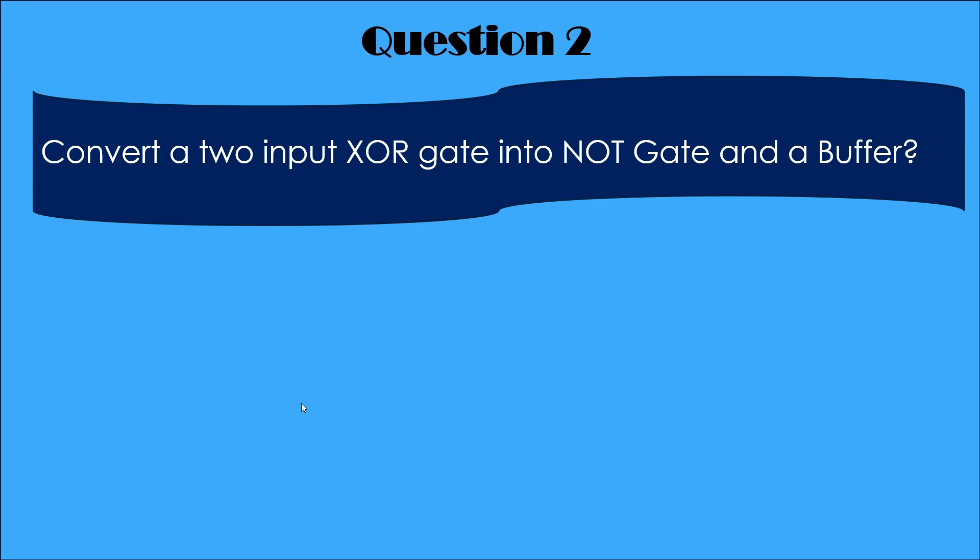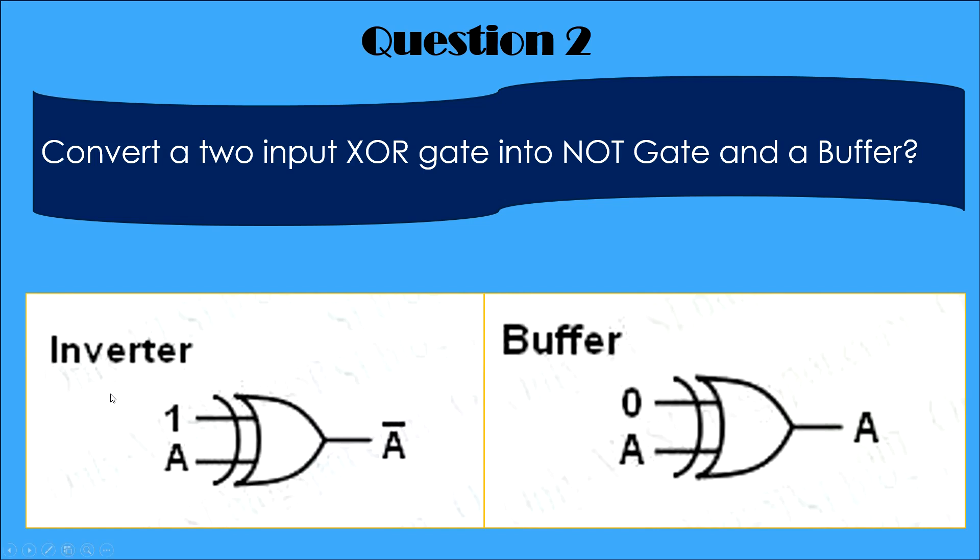Convert a two input XOR gate into a NOT gate and a buffer. And the answer is, when we want to convert an XOR gate into a NOT gate, tie its one of the input to 1. So when you will give 0 at the output, when you will give 1 here, you will get 0 at the output.